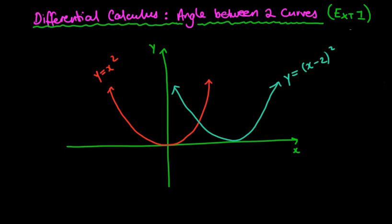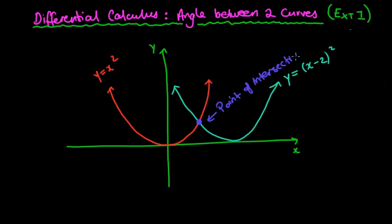So what does it mean to find an angle between two curves? We've got two curves here — I've used two parabolas: y equals x squared, and y equals (x minus 2) squared — but they could be any sort of curves. You'll notice that the two curves intersect at a point, which we call our point of intersection, or POI. At that point of intersection, it creates an angle between the two curves — that angle is theta, and that's what we're going to be finding.